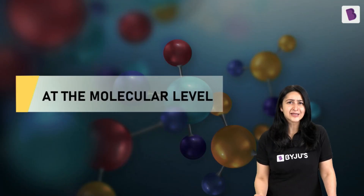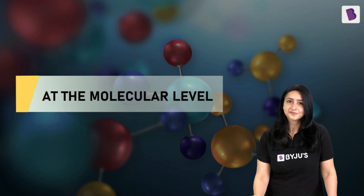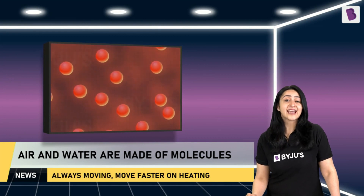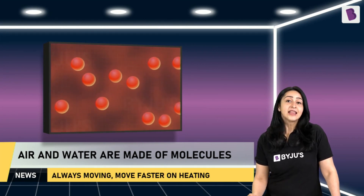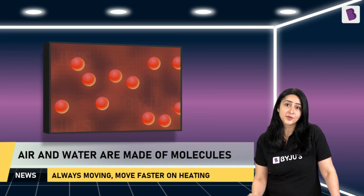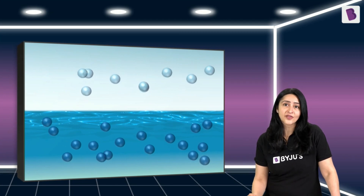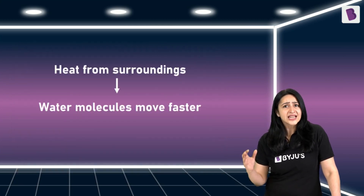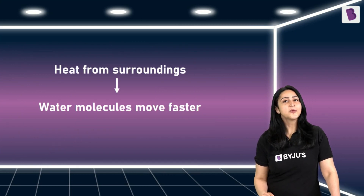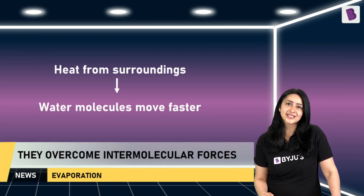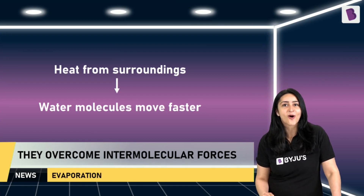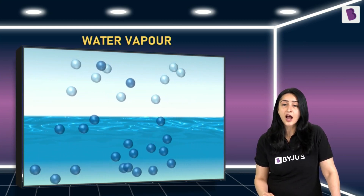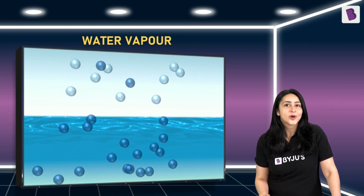Let's dig a little deeper and see what happens at the molecular level. Air and water are made of molecules that are moving, and on heating, these molecules get energy and start moving faster. This is what also happens during evaporation of water from water bodies. Water molecules are bound to each other with intermolecular forces, thus staying together as a liquid. When the surroundings are hot, they take up this heat and start moving faster. As they move faster, they push each other away and are thus able to overcome the intermolecular forces of attraction, allowing them to come out of the liquid water and go into the air. These molecules are now so far apart that they behave like a gas, which we call water vapor.